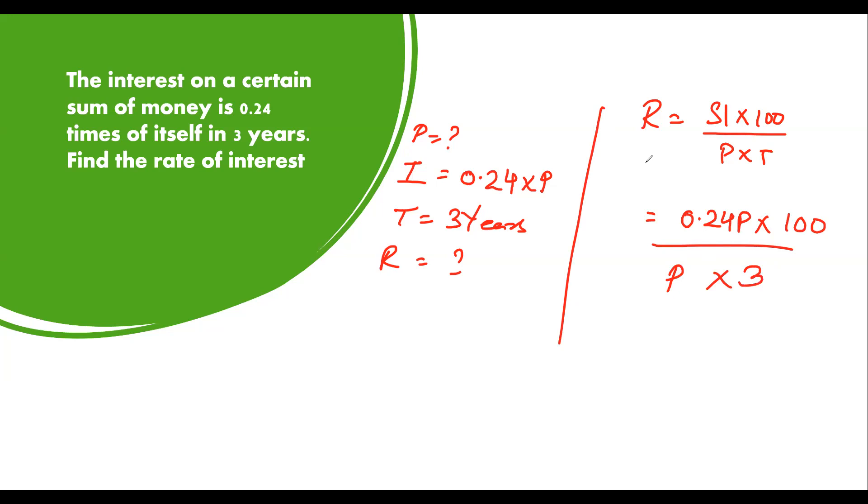Now simply, P cancels with P. 0.24 multiplied by 100 gives 24, and 24 upon 3 is 8. So this comes out as 8% rate of interest. I hope you understood this question. You need to practice these types of questions. You can watch out the video in which I've solved all the questions related to simple interest. Let's do one more question in this video and we'll proceed towards the end.